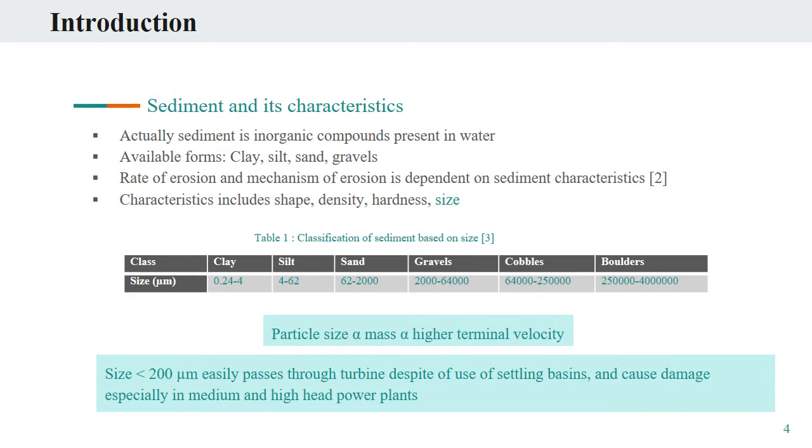Let's briefly talk about the sediment and its characteristics. Sediments are actually inorganic compounds present in water in the form of clay, silt, sand, gravels, and can be categorized based on shape, density, hardness, and size. These characteristics are solely responsible to alter the rate and mechanism of erosions. In this paper, hydrocyclone performance is evaluated by considering the sediment size as an erosion influencing factor. Table 1 shows the classification of sediment based on its size.